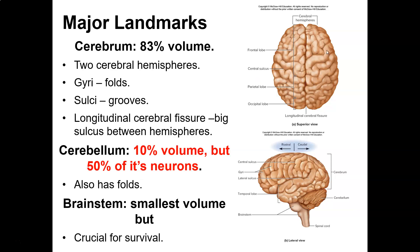You have two cerebral hemispheres, right and left, connected by the corpus callosum. You have the frontal lobe, parietal lobe, and occipital lobe. You have gyri, which are folds, and sulci, which are grooves. The longitudinal cerebral fissure is the big sulcus between the hemispheres. The cerebellum looks like a cauliflower shape — 10% of brain volume but 50% of the neurons. The brainstem, including the medulla oblongata and pons, is crucial for survival. Any injury to the brainstem gives you a very slim chance of survival.